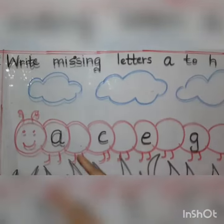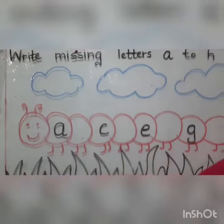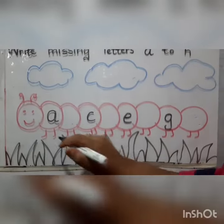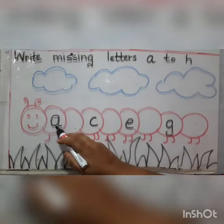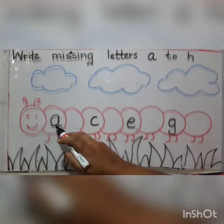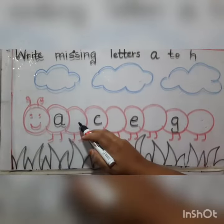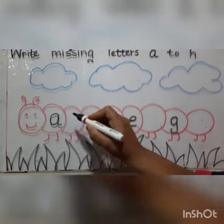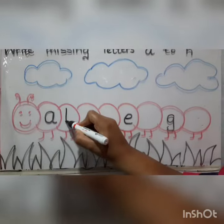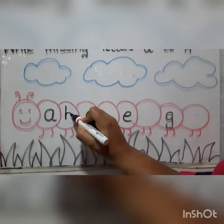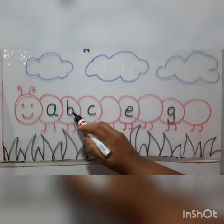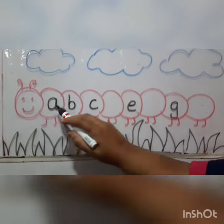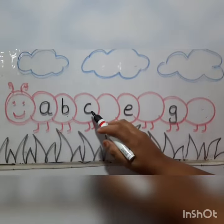Shall we find them? Let's start. Which letter is this? This is letter A. So what will come after letter A? Letter B. Look Corrie, your one letter is back. A, B, C.